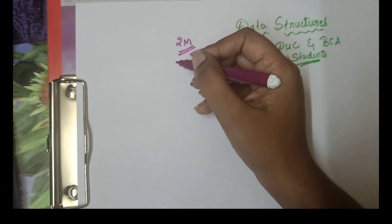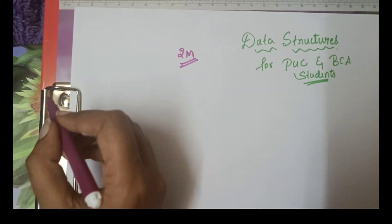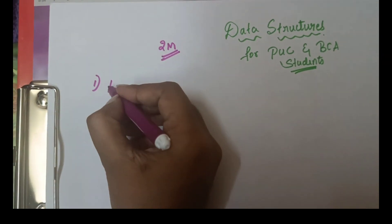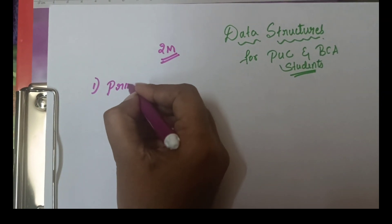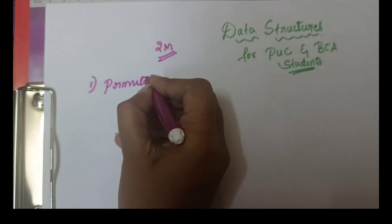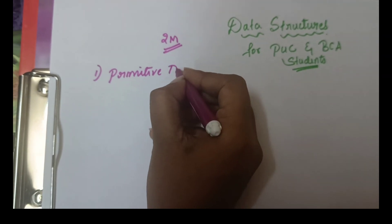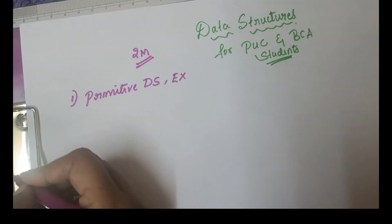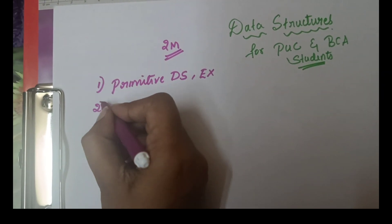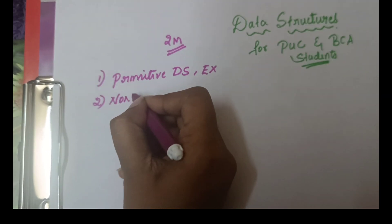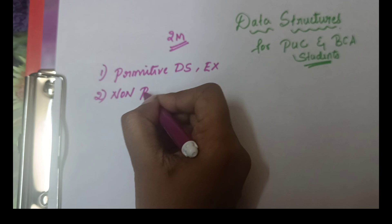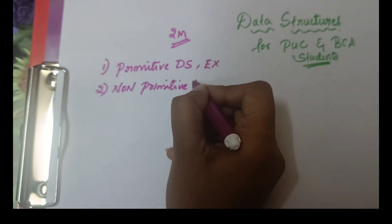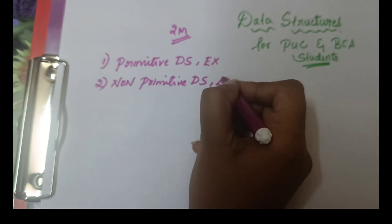First, I will answer the questions. Students, just focus on two-mark questions — the most expected questions. The first most expected question is: what is primitive data structure and example? The answer is it is machine-level work based on machine-level instructions. Examples are int and float.